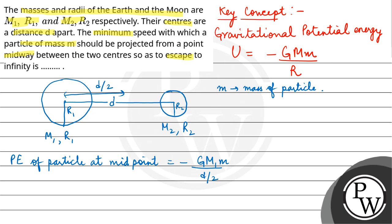This is the potential energy due to the gravitational pull of Earth, and this is the potential energy due to gravitational pull of Moon. M2 is the mass of Moon. So this is potential energy.